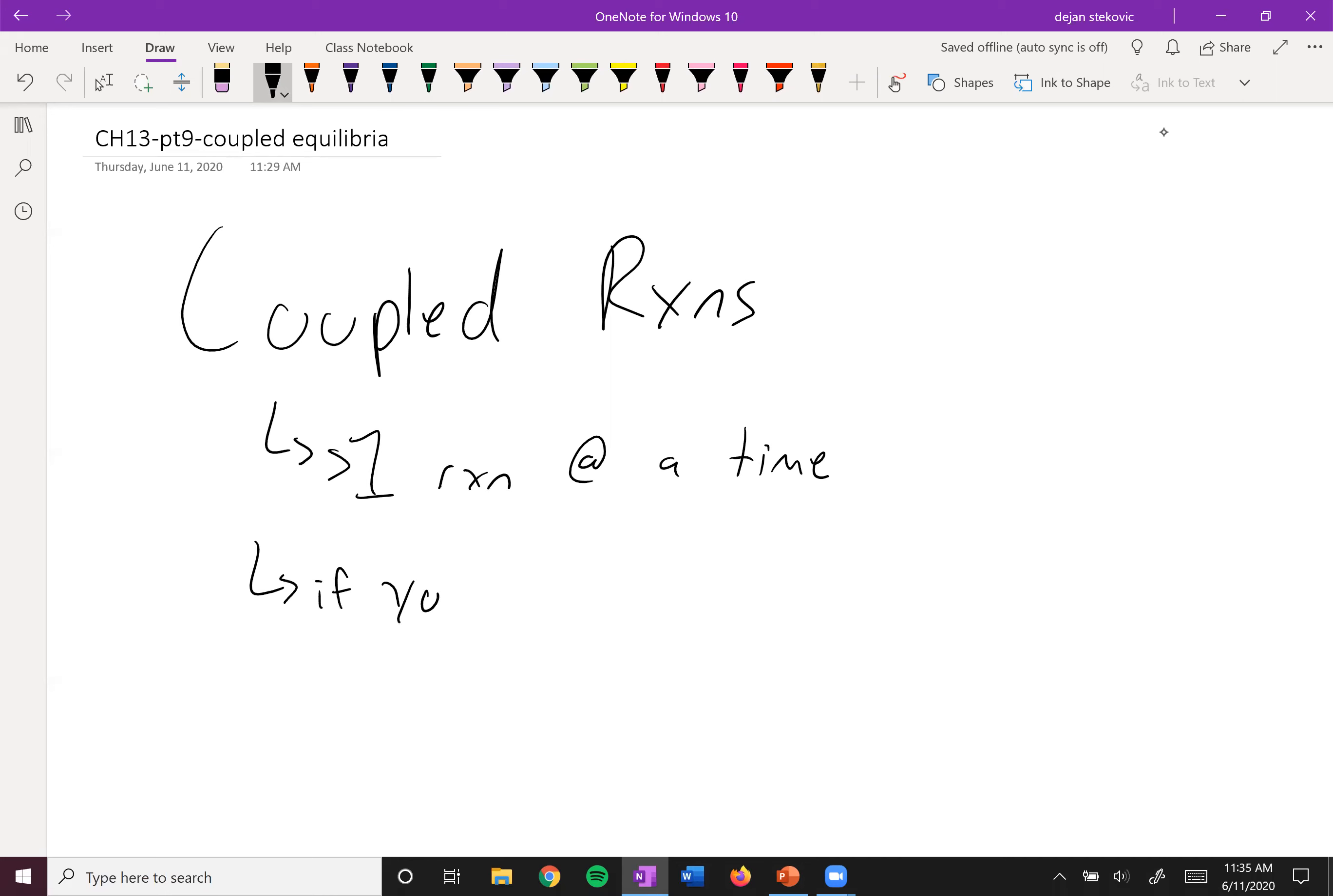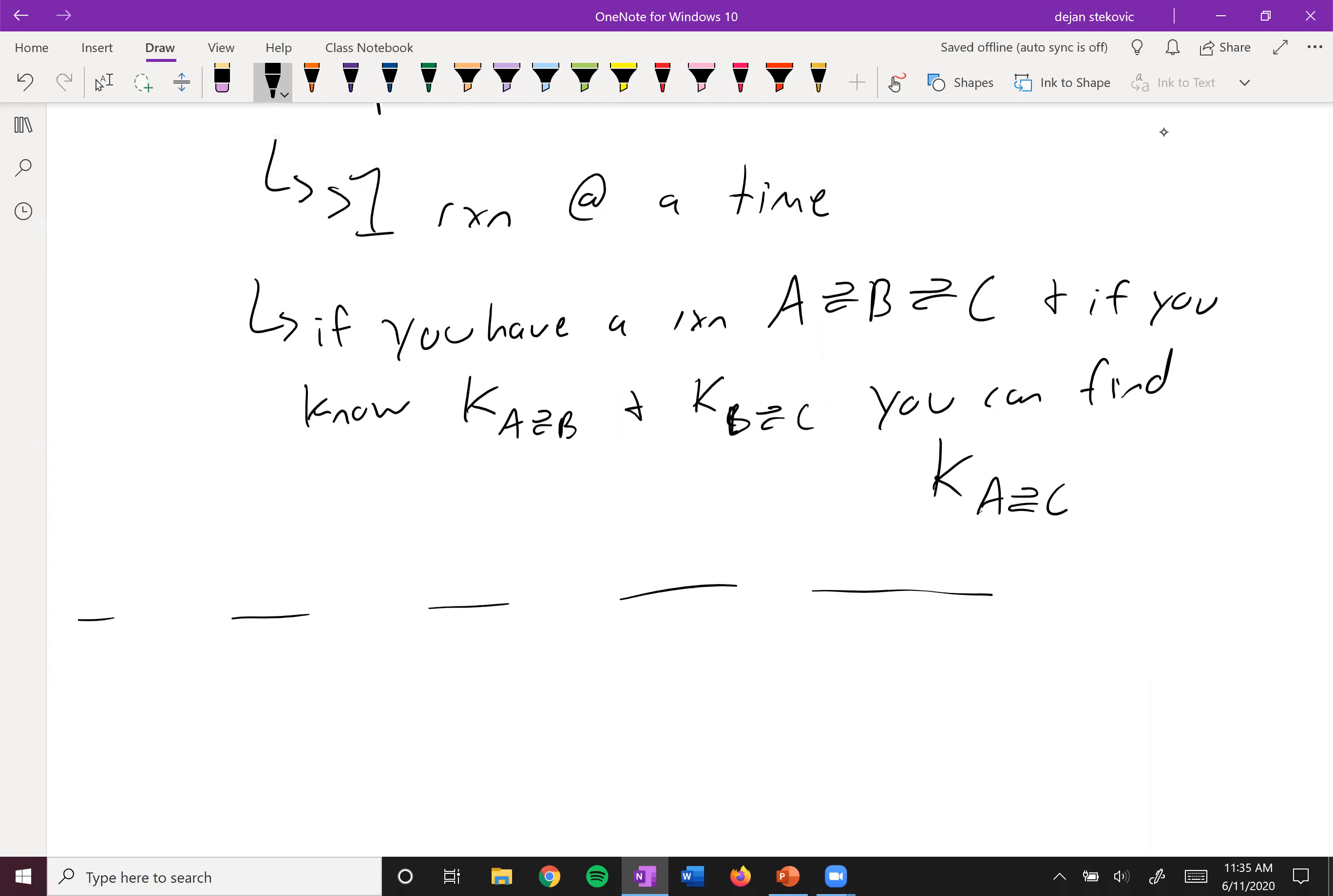So for example, if you have a reaction in which A is in equilibrium with B, and then B is in equilibrium with C, and if you know the K for A and B, and the K for B and C, you can find the overall K, right? K of kind of A and C. So let's take a look at an example of this.